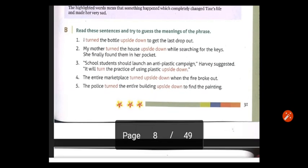Now move to next exercise. Exercise B, read the sentences and try to guess the meaning of the phrase. Means you have to write the meaning of turned upside down. In every sentence it has different meaning. According to the sentence, you have to write the meaning of this sentence. Number 1, I turned the bottle upside down to get the last drop out. Answer is, means to turn the bottle to get the last drop. Number 2, My mother turned the house upside down while searching for the keys. She finally found them in her pocket. Answer is, means to put all the things here and there in search of keys.